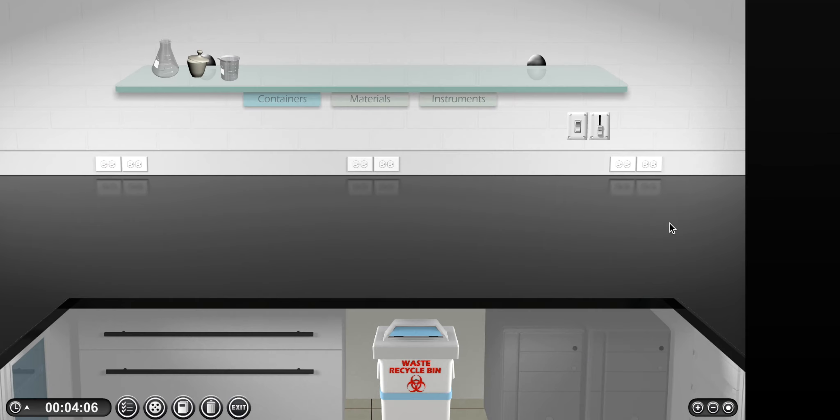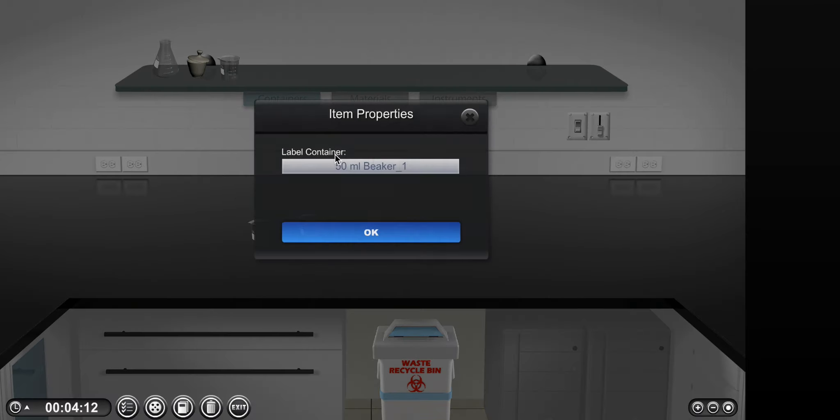For this experiment, we will start with two 50 milliliter beakers. We will label the first beaker NaOH for sodium hydroxide and the second NiCl2 for nickel chloride.